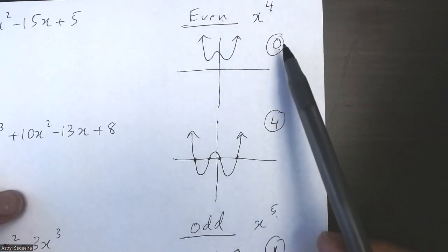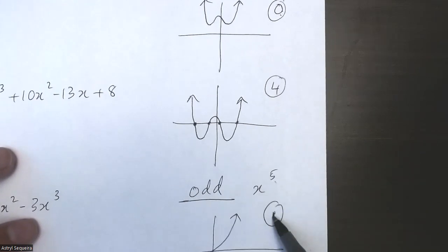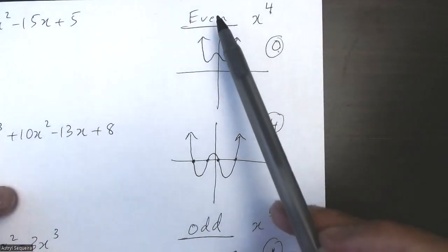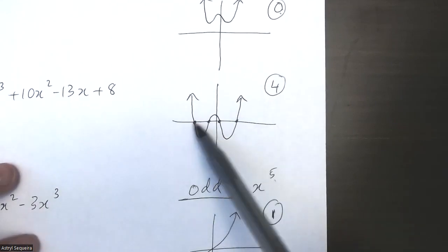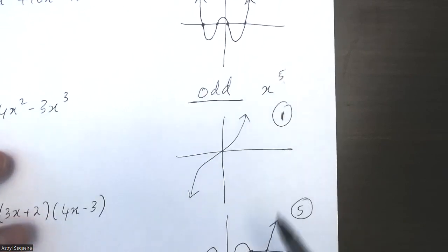So for even functions, your minimum number of zeros is going to be zero. For odd functions, the minimum is going to be one. And for both even and odd functions, the maximum number of zeros is going to be the same as the degree of the function.